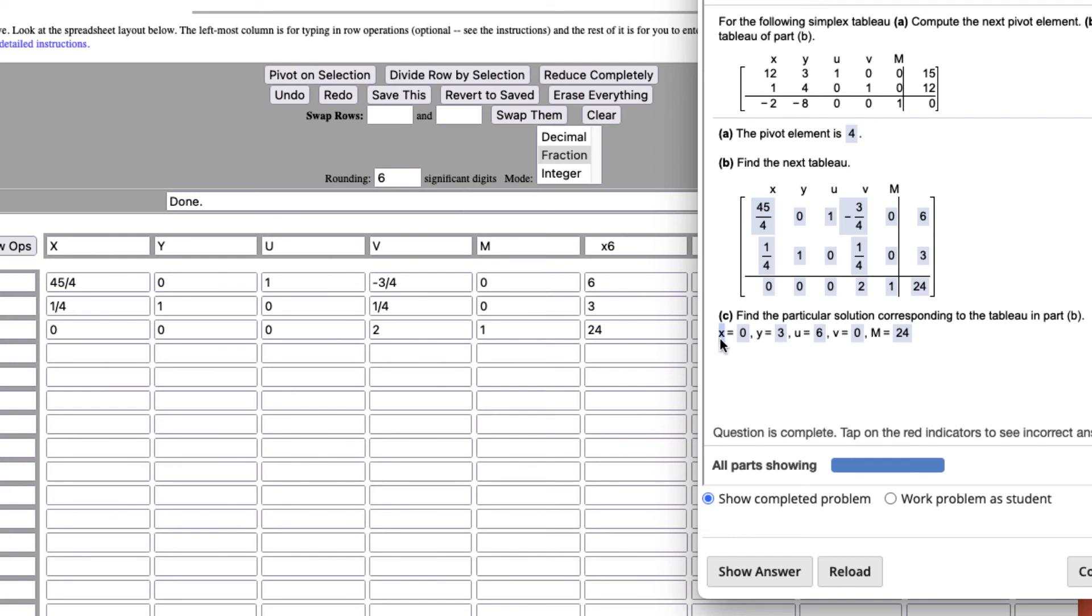So the corresponding point, if you put them in order, x equals 0, y equals 3. 0, 3 is the point on a graph, if you were to graph these equations, and that would be considered the maximum of 24, with a slack variable of 6. Hope that helps.